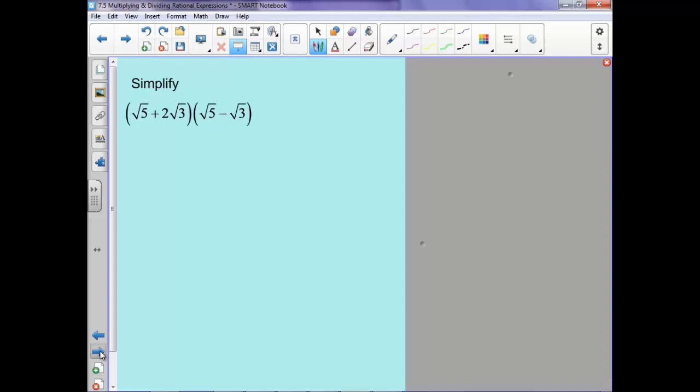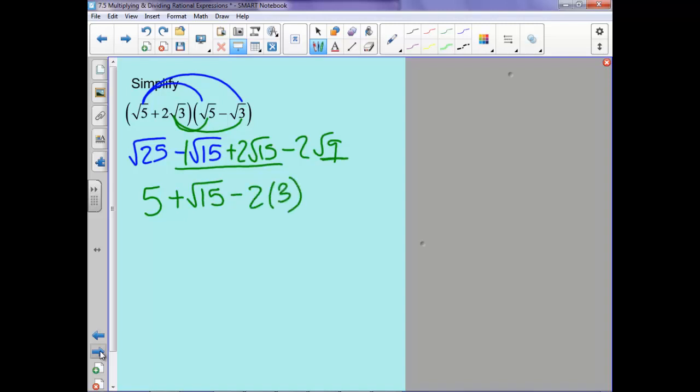So this is the same idea, we're going to distribute. Root 5 times root 5 is root 25. Root 5 times root 3 is negative root 15. 2 root 3 times root 5 is 2 root 15. And then when we multiply these two, we'll have minus 2 root 9. Root 25 is 5. Remember there's a 1 here, so when we combine these two, we'll have a positive root 15. Minus root 9 is 3, so we'll have 2 times 3, or 5 plus root 15 minus 6. And so 5 minus 6 is negative 1 plus root 15.